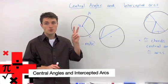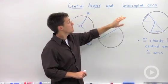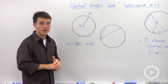In the circle universe there are two related and key terms: central angles and intercepted arcs. We'll start off with the central angle.